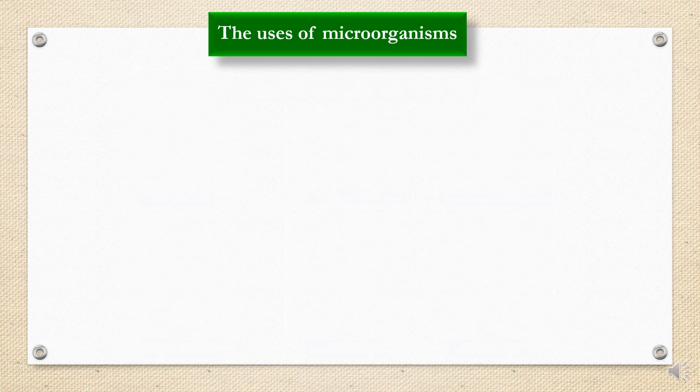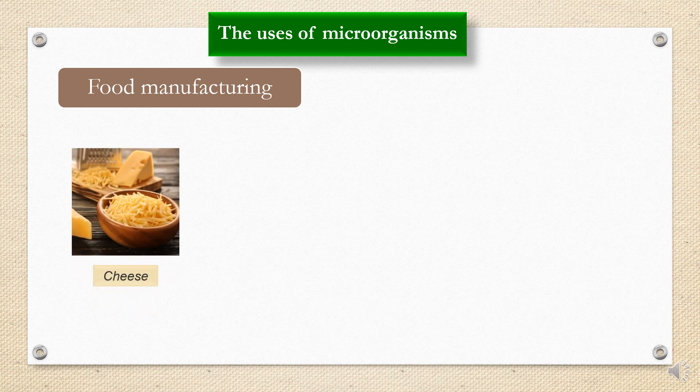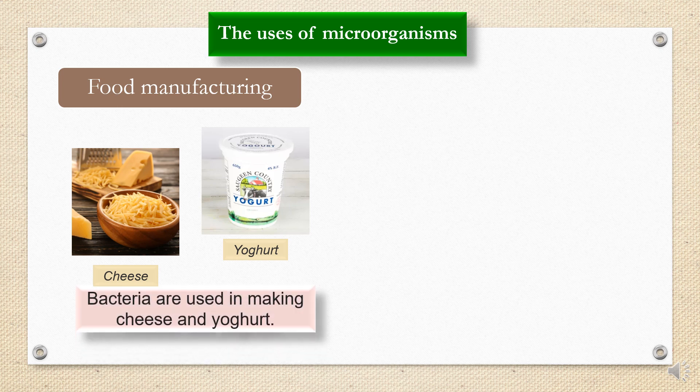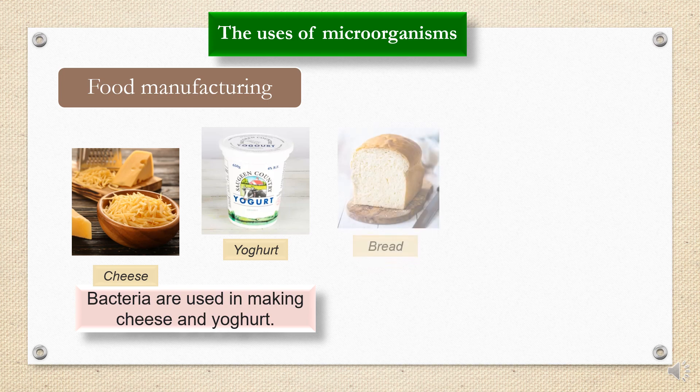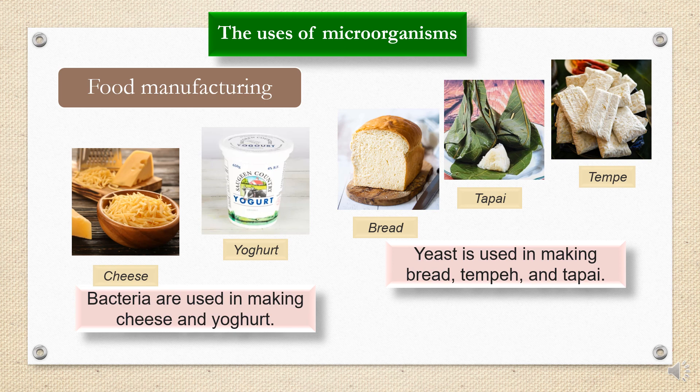Now we move to the good side of microorganisms. The uses of microorganisms: first, microorganisms are used in food manufacturing. I know some of you like cheese. Everything is added to cheese. Do you know that cheese is made by the action of microorganisms? Same with yogurt, like Yakult, Nutrigen, and Nestle Bliss. That is a yogurt drink. So yogurt and cheese are made from microorganisms. Bacteria are used in making cheese and yogurt. We also have bread, tapai, and tempeh. I love tempeh, sambal tempeh. To make this bread, tapai, and tempeh, we use yeast. So we get that food. That is food manufacturing.